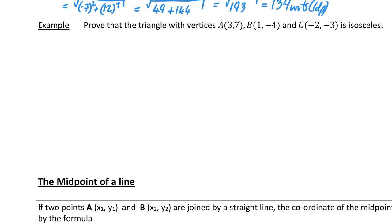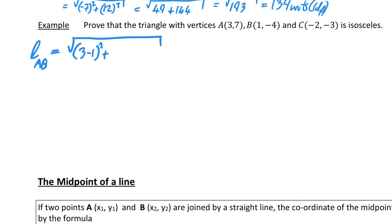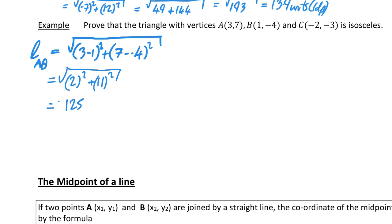This example says: prove that the triangle with vertices A(3, 7), B(1, -4), and C(-2, -3) is isosceles. I'm going to work out the length of all sides. Length AB equals the square root of (3 minus 1) squared plus (7 minus minus 4) squared, which is the square root of 2 squared plus 11 squared, giving the square root of 4 plus 121, which is the square root of 125.